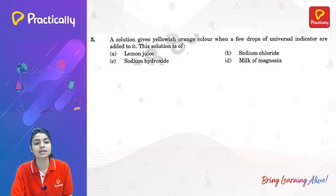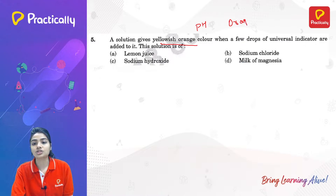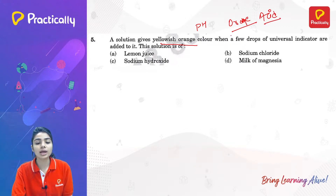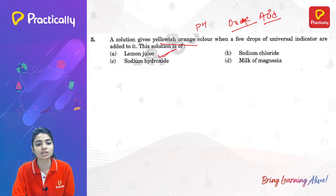A solution gives a yellow-orange color when a few drops of universal indicator are added. The options are lemon juice, sodium hydroxide, sodium chloride, or milk of magnesia. Orange on the universal indicator means acidic, so the pH is lower. Lemon juice contains citric acid and is acidic; sodium hydroxide is a base, sodium chloride is a salt, and milk of magnesia is a base. So option A — lemon juice — is the correct answer.